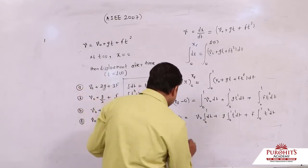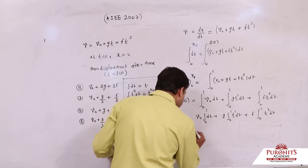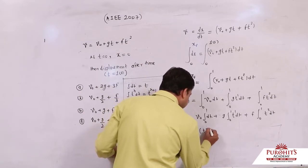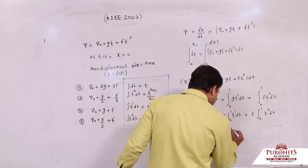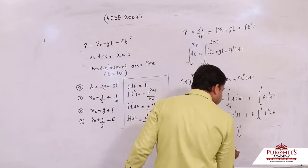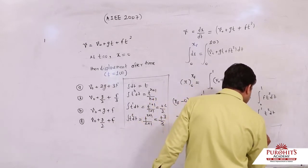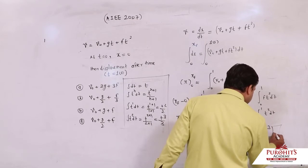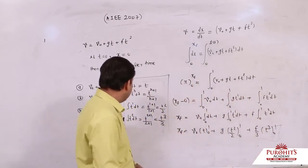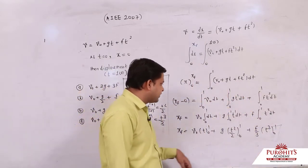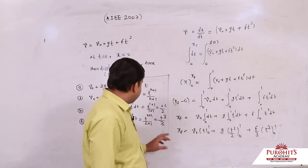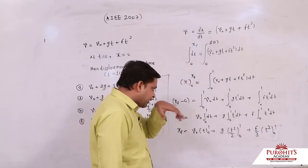So see, xf equals v0 dt is t from 0 to 1, g t square by 2 from 0 to 1, f by 3 t cube from 0 to 1, because t to the power 1 dt integration can be directly written as t square by 2, t to the power 2 dt integration can be written as t to the power 3.